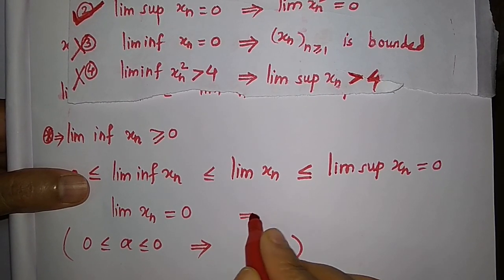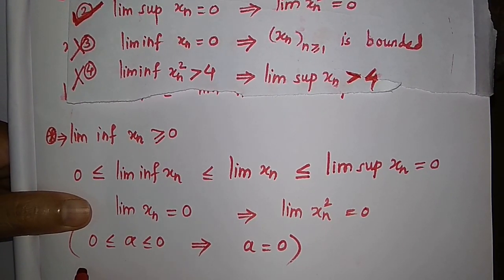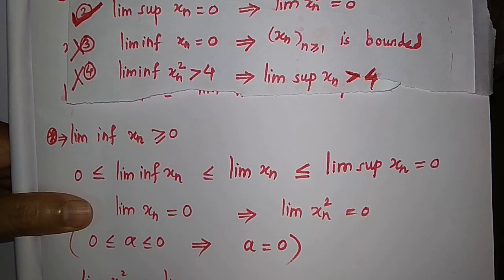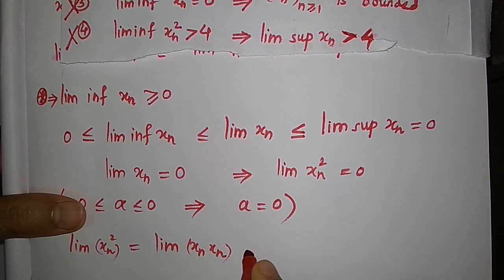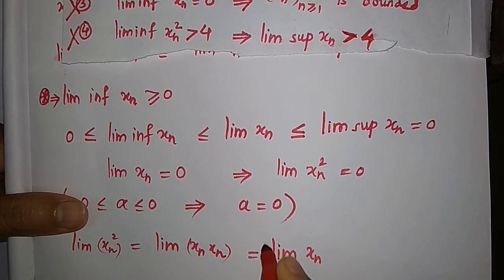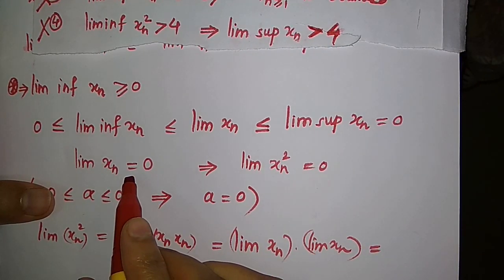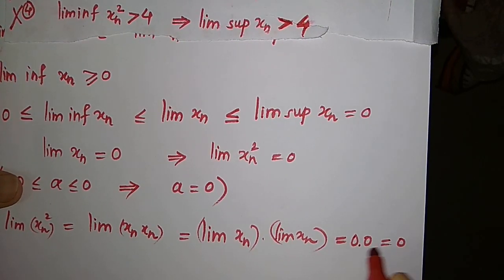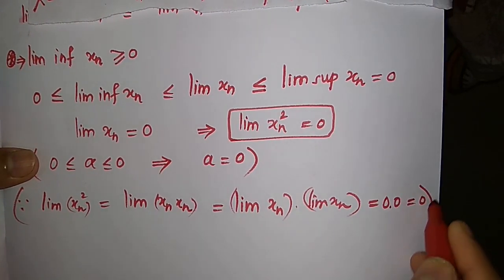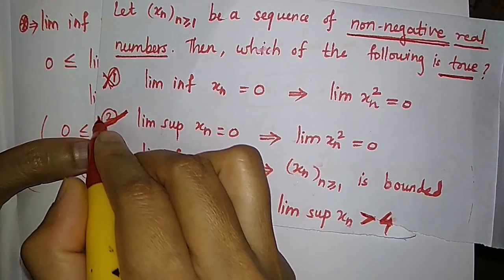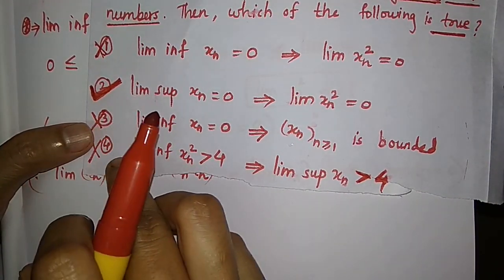If lim xn = 0, then this clearly implies lim xn² = 0 as well. This is because lim xn² = lim(xn · xn), and since lim xn = 0, this equals 0 · 0 = 0. So the second option is correct.